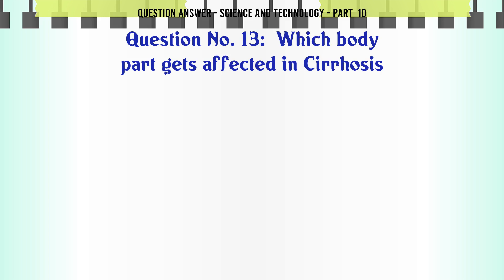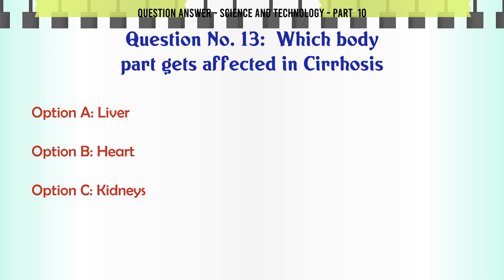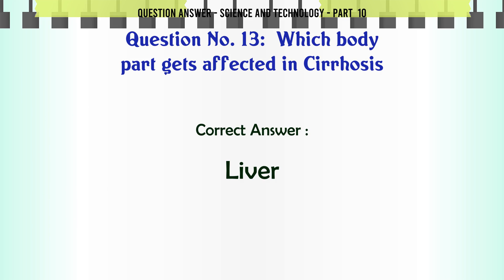Which body part gets affected in cirrhosis? A. Liver. B. Heart. C. Kidneys. D. Lungs. The correct answer is Liver.